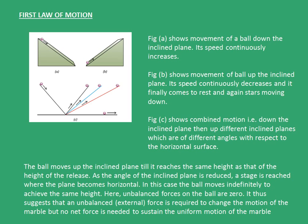Now, as we make the second inclined plane horizontal, the ball moves indefinitely to reach the same height. In this case, unbalanced forces on the ball are zero. Hence, it suggests that unbalanced forces is required to change the motion of the marble, but no net force is needed to sustain the uniform motion of the marble.